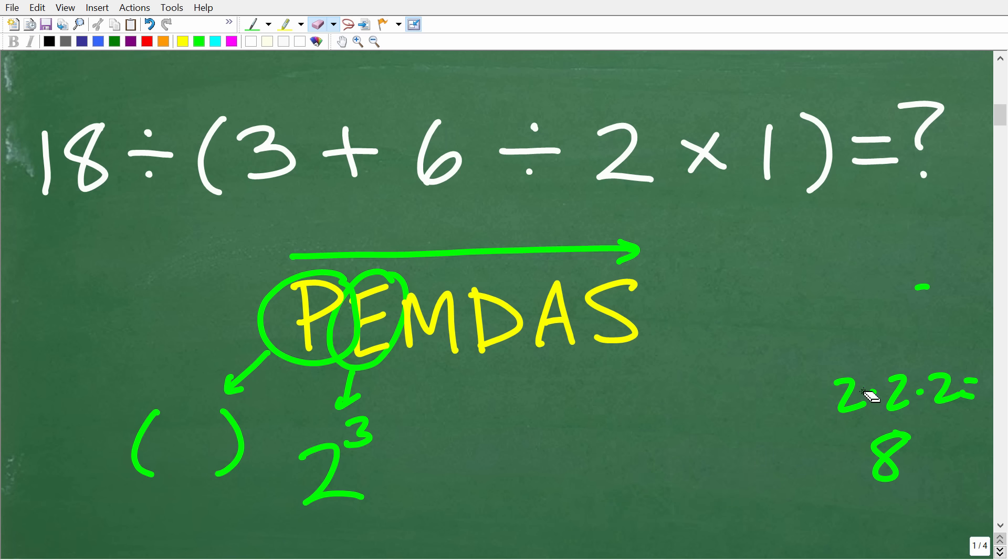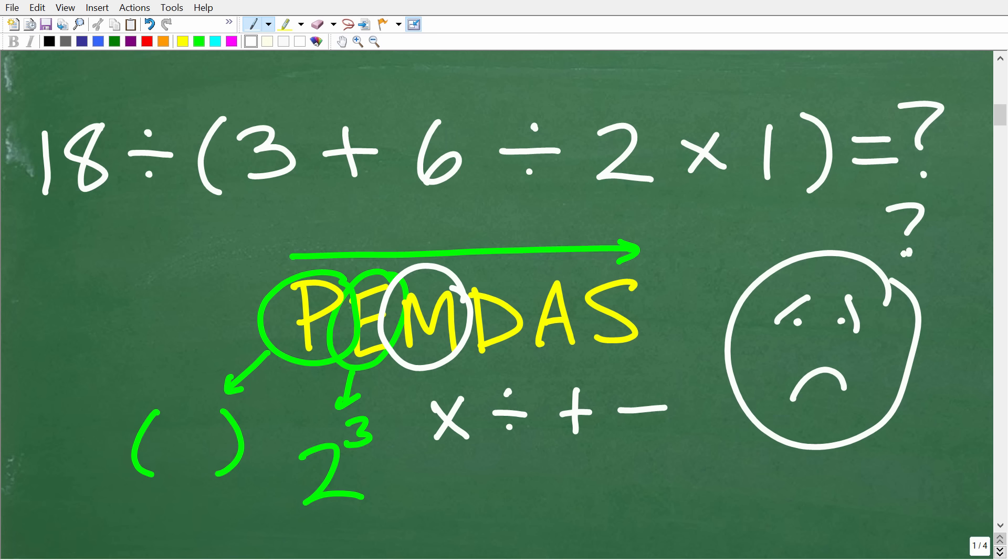Okay, so now we're down to MDAS. And let me go ahead and just tell you what these things stand for before we get into how to use this PEMDAS checklist. So, M stands for multiplication. D stands for division. A stands for addition. And S stands for subtraction. Now, it seems logical that the next thing that we need to do here is multiplication because it's the next thing on our list from left to right. Unfortunately, this is wrong.